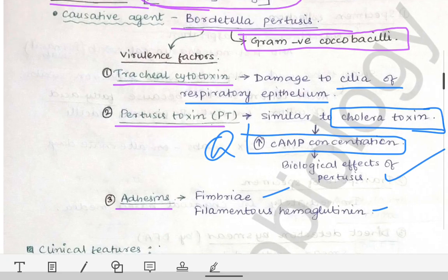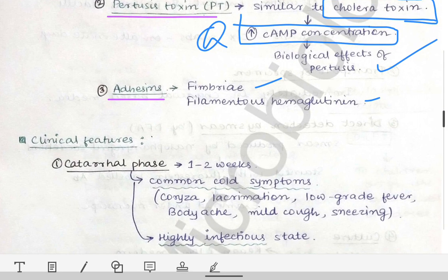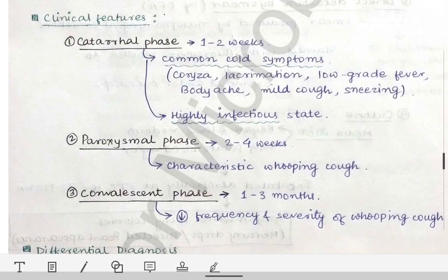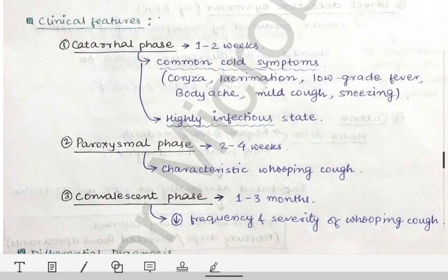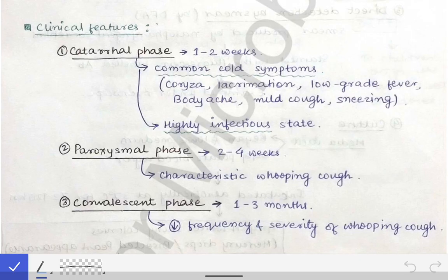Those are the virulence factors of Bordetella pertussis, a gram-negative coccobacillus. Moving to the clinical features of whooping cough, there are three stages: the first is the catarrhal phase, the second is the paroxysmal phase, and the third is the convalescent phase.